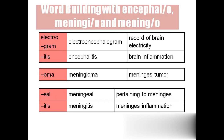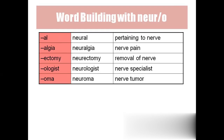Electroencephalogram — electro, and gram means recording, so we are recording the electricity of the brain. Encephalitis: brain inflammation, because encephalo means brain. Meningioma — if you get -oma as the suffix, which means tumor, so meningioma means meninges tumor. Meningeal: pertaining to the meninges. Meningitis: inflammation of the meninges.